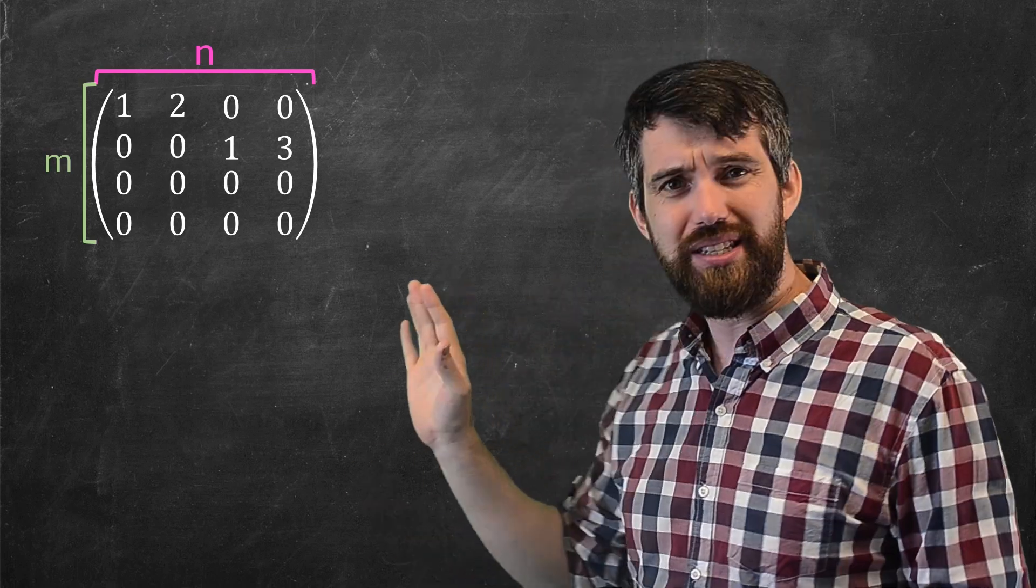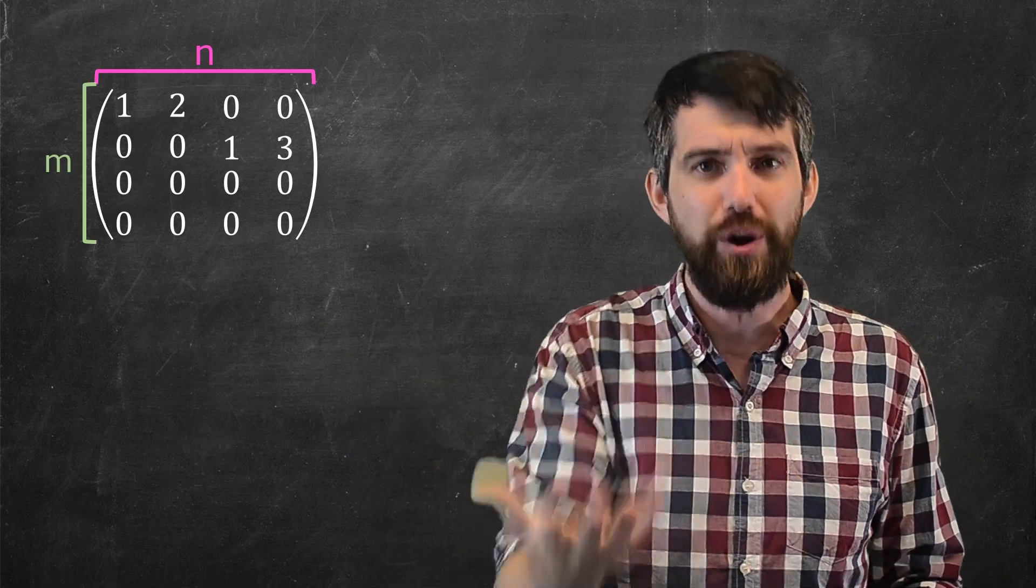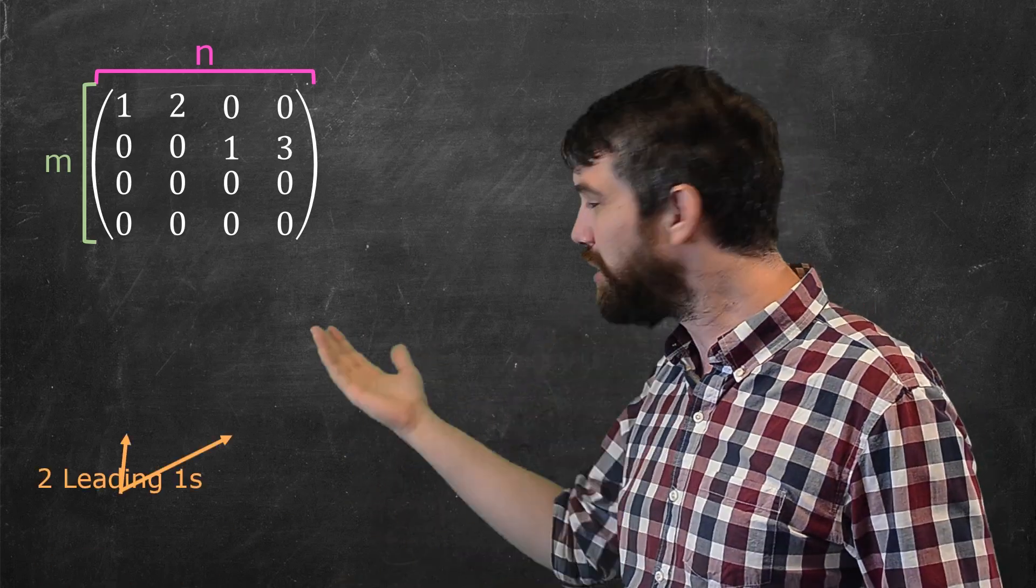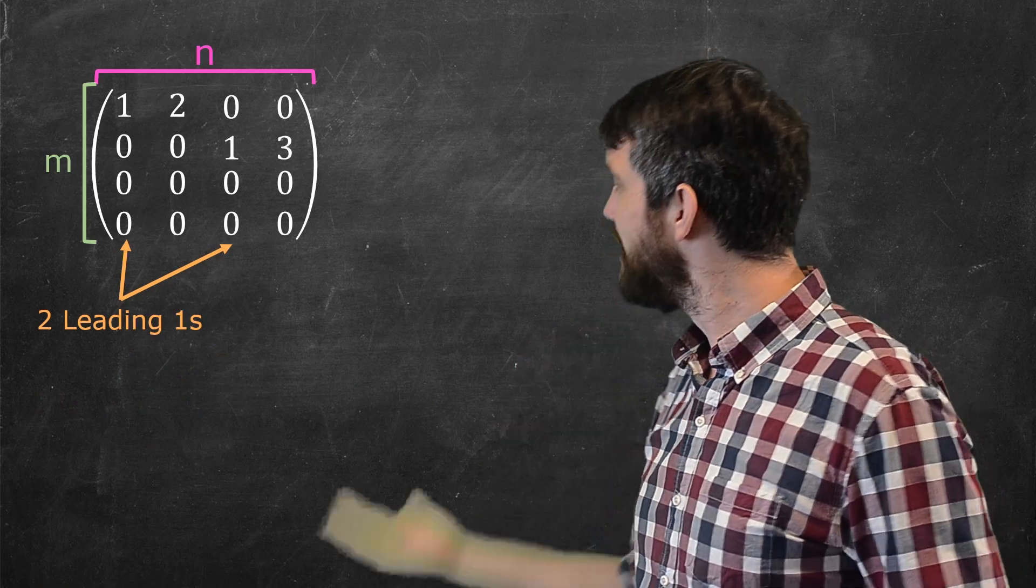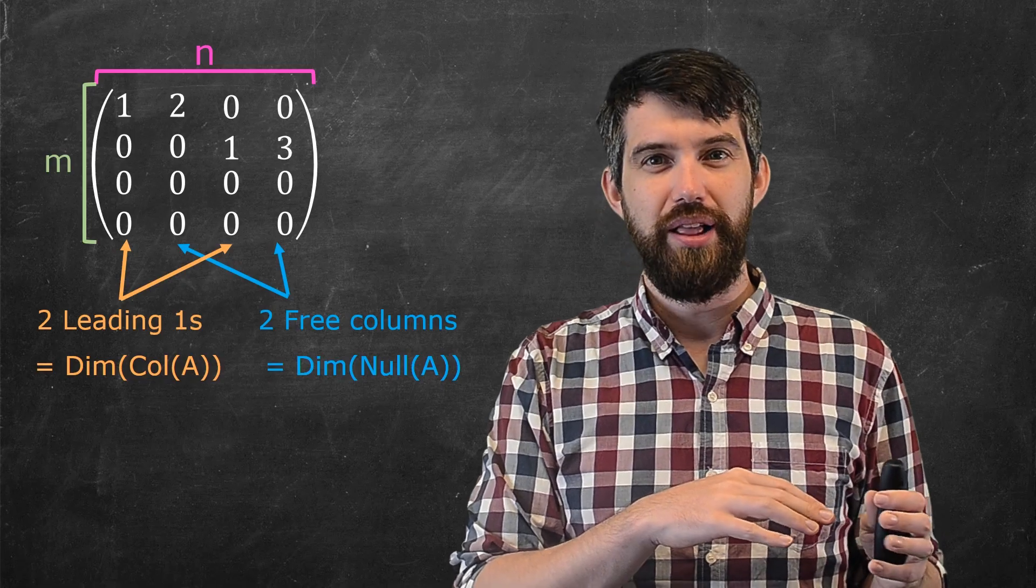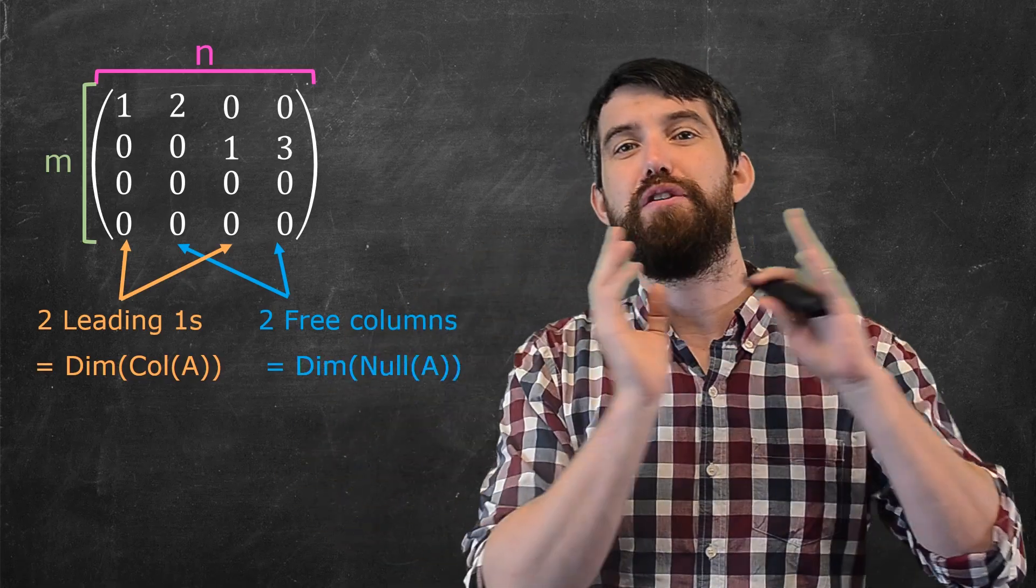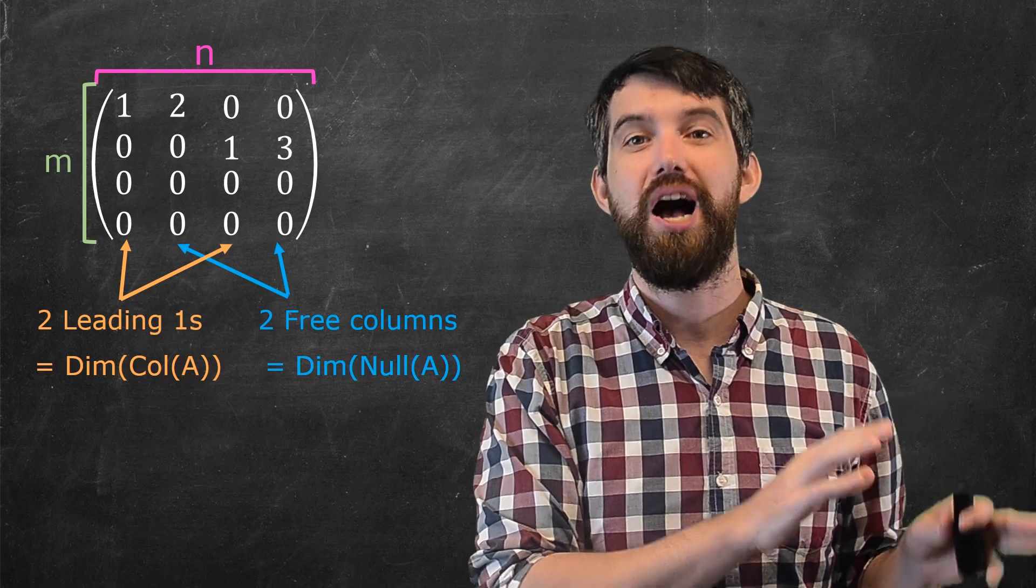And I note that in this matrix, some of the columns will be ones with leading ones, and some of the columns will be free ones. So in this case, we've got the two here which have leading ones, and we've got another two here which are free. And then, as we've seen in the prior video, the number of leading ones is the dimension of the column space. The number of free variables is the dimension of the null space.